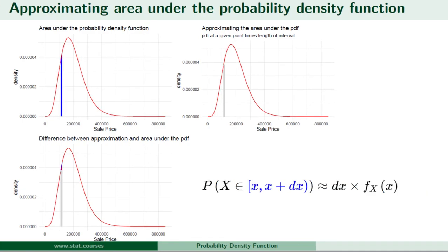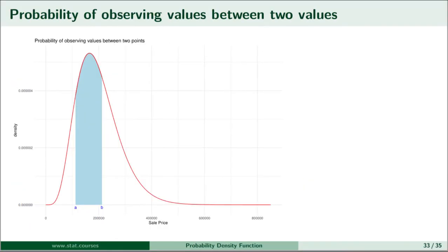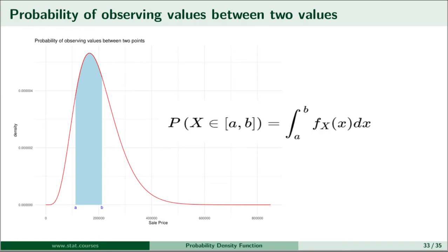This gets us to one key concept: the probability that a random variable X takes values between points a and b is equal to the area under the probability density function that lies within that interval. Calculus gives us a way to calculate area under a curve using integrals. So the probability that X takes values between a and b is equal to the integral from a to b of the probability density function f(x) dx.